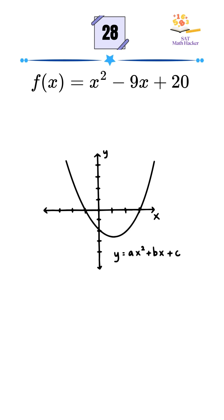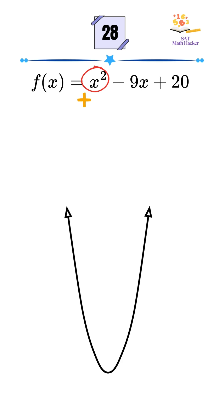This is the equation of a parabola. And since the coefficient of x squared is positive, the parabola opens upward. That means the range has no upper limit. It goes up to positive infinity.